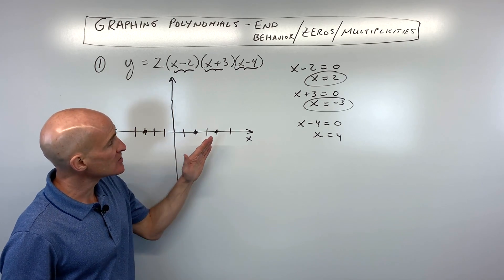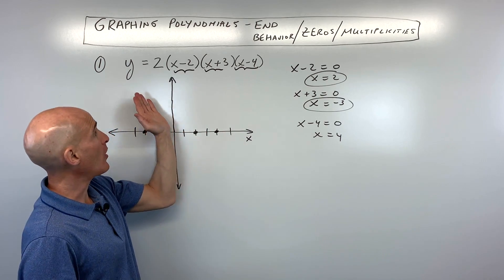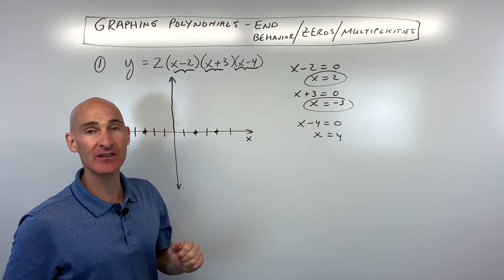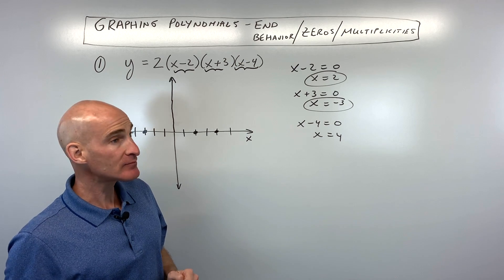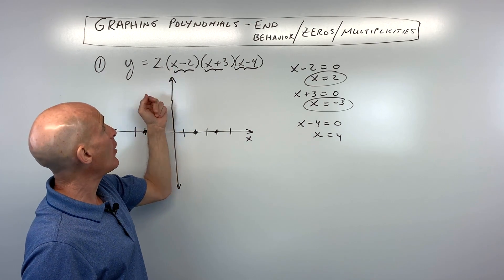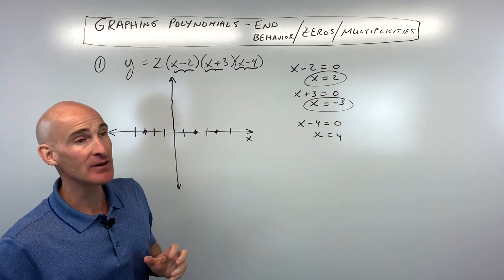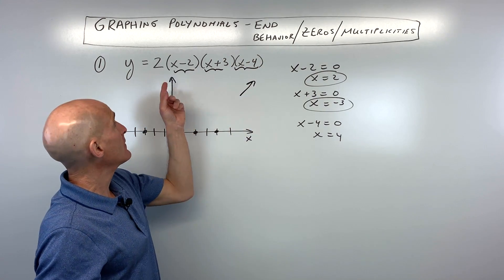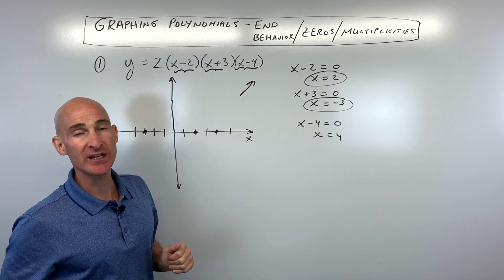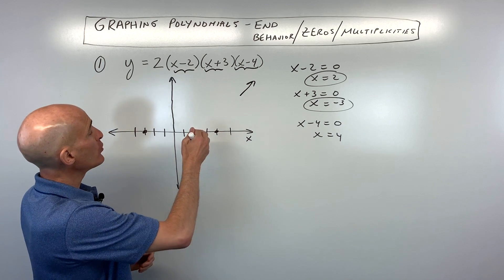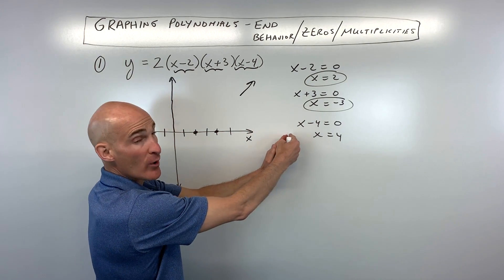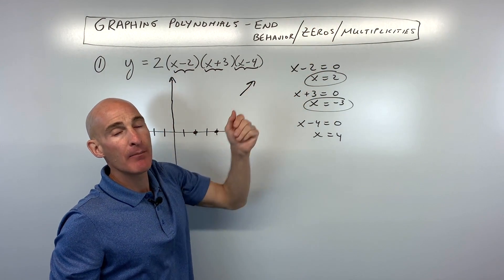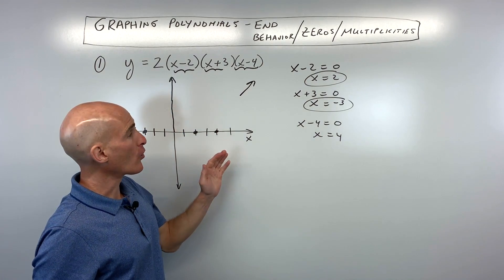Next, look at end behavior — does the graph go up or down to the right, and up or down to the left? You determine this using the leading coefficient. If it's positive, the graph goes up toward positive infinity to the right. If negative, it goes down. You can test this by plugging in a large number like 10 to see if the result is large and positive.